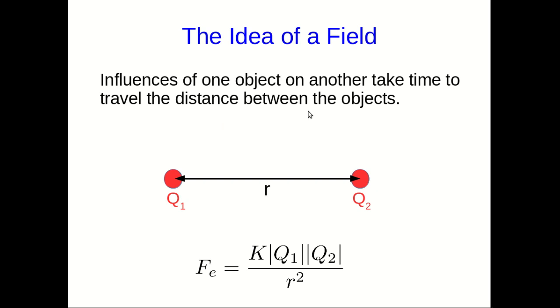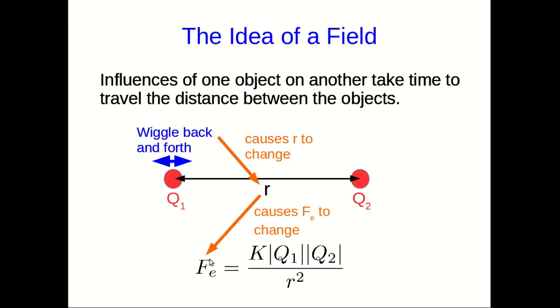So now let's think of something more closely related to what we've been talking about with electric forces. But I want you to keep that image of the light filling all of space around the sun in your mind. Because we're going to use the same sort of idea here. So let's think about two charges separated by a distance r. And so we can use Coulomb's law to calculate the force that they exert on each other. Now let's suppose that we wiggle this charge q1 back and forth. That's going to change the value of r. And so in turn it's going to change the value of the force. But it doesn't happen immediately.